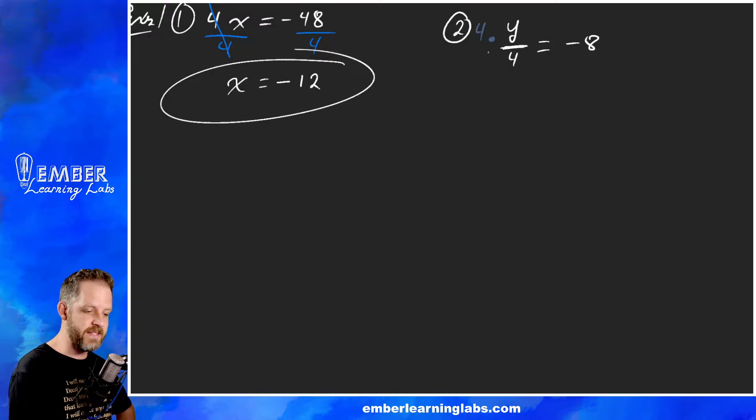To get rid of it, what's the opposite of dividing? We're going to multiply. So we're going to multiply times four. We do it on this side, we got to do it on this side. Four over four is also one so that cancels, leaving us with just a y on this side equals negative eight times four, which is negative 32.